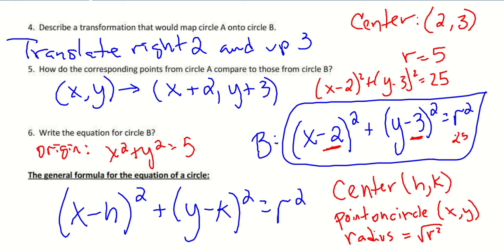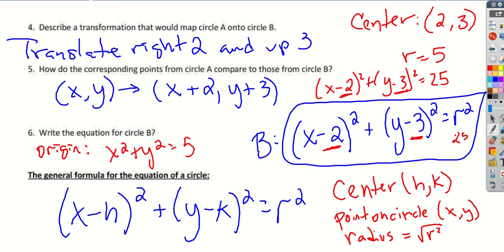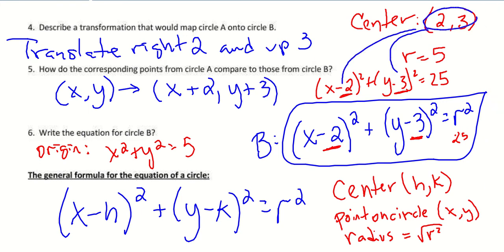Going backwards — once I know the equation, I have to change the sign of the two numbers in the parentheses to get the actual center. So if it's minus 2, it's a positive 2 in x; minus 3 for y becomes positive 3 for the y-coordinate of the center. And then the square root of 25 gives us the radius, which is 5.